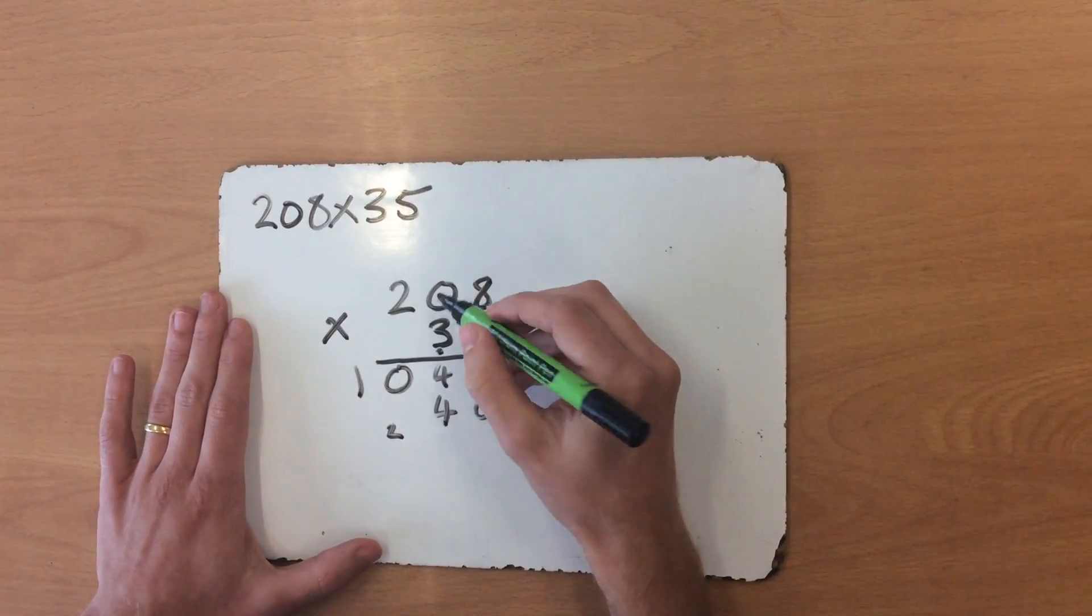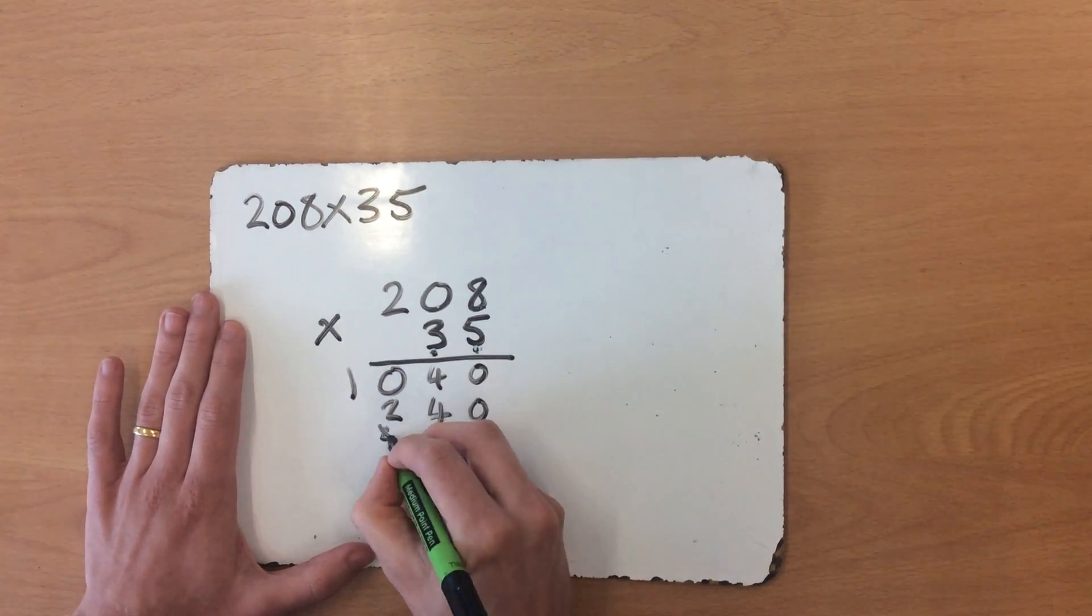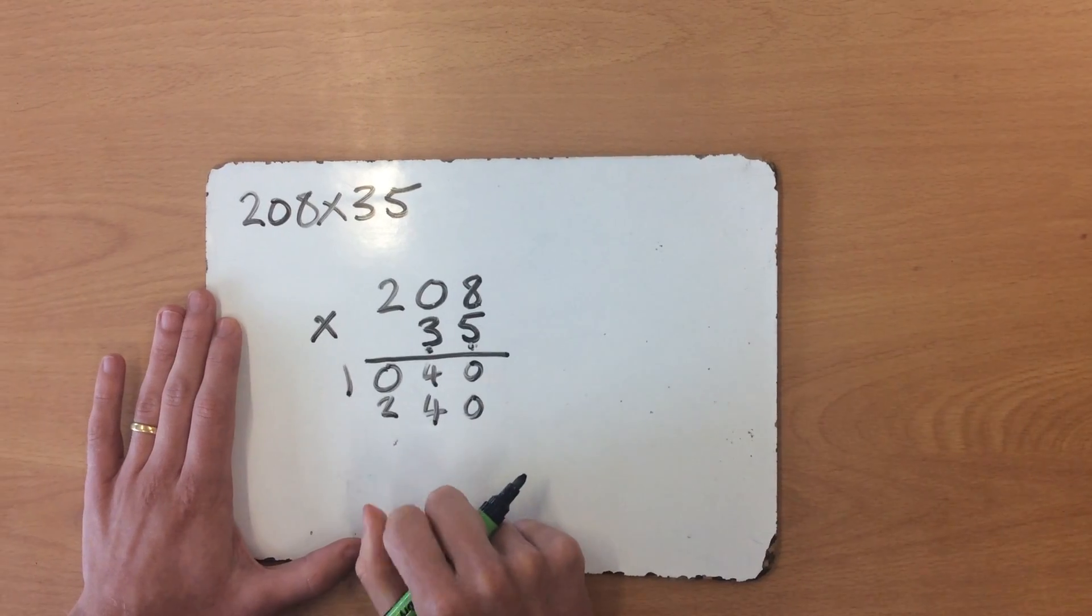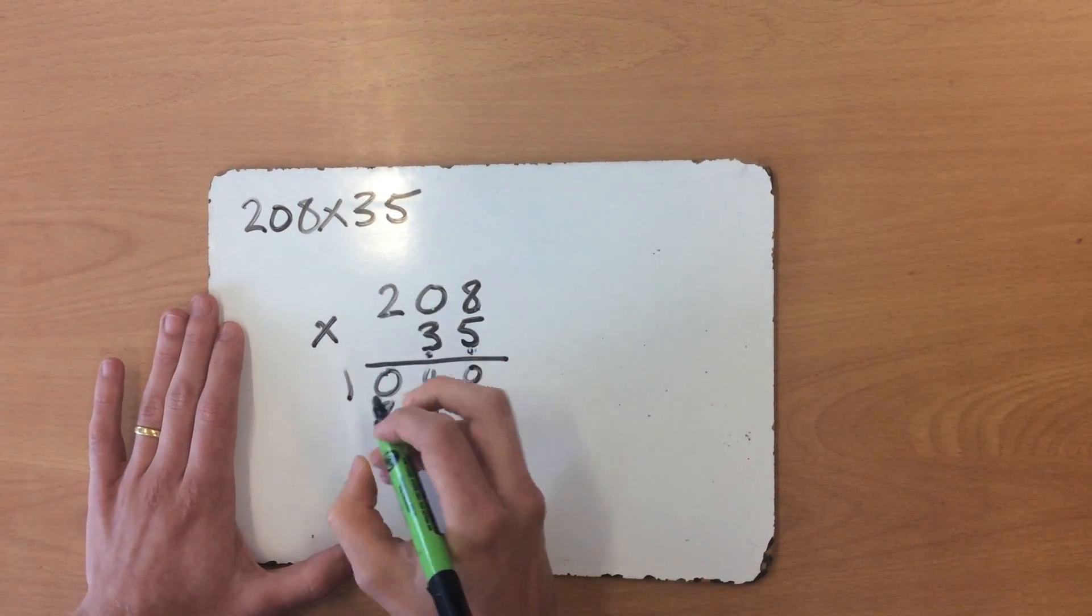3 times 0 is still 0, plus my 2, which gives me 2. Now make sure you've crossed that 2 off or rubbed it out, whatever you prefer. And then, of course, 3 times 2. 3 times 2 is 6.